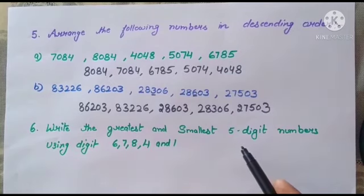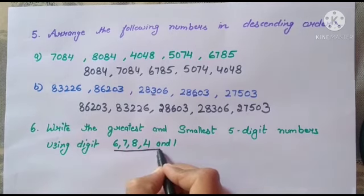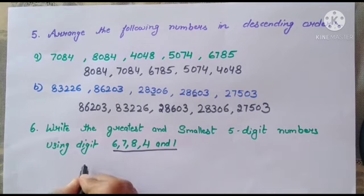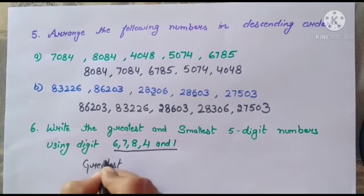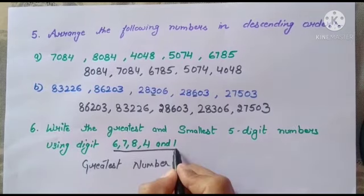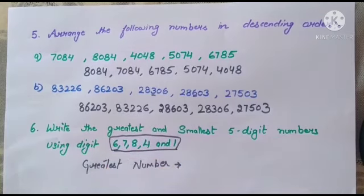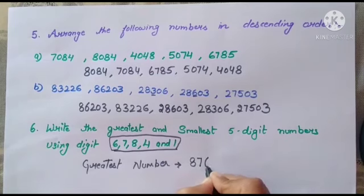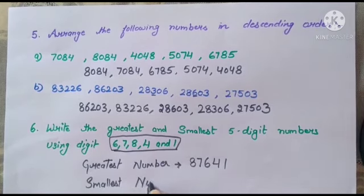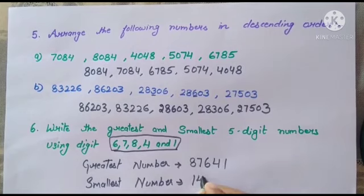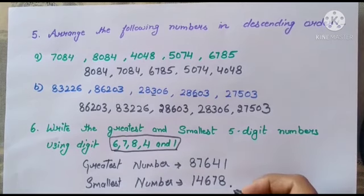Question 6: Write the greatest and smallest 5-digit number using the given digits. For the greatest number, arrange digits from largest to smallest: 8, 7, 6, 4, 1. For the smallest number, arrange them from smallest to largest: 1, 6, 7, 8. Complete Exercise 1.3 in your fair copy. Thank you, students.